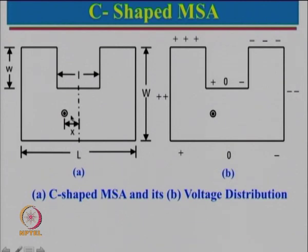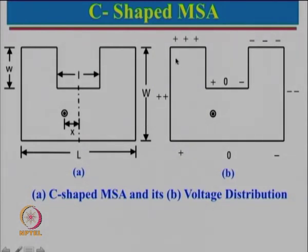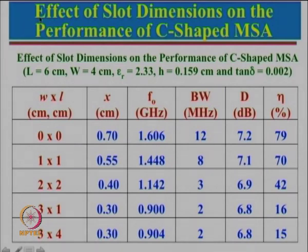For the field distribution: since the symmetrical axis has field = 0 on both ends, the field varies from 0 to plus, double plus, triple plus along one path, and 0, minus, double minus, triple minus on the other side. This is how you calculate the effective length — average of the two lengths equated to lambda by 2 — whether the slot depth is small or large.